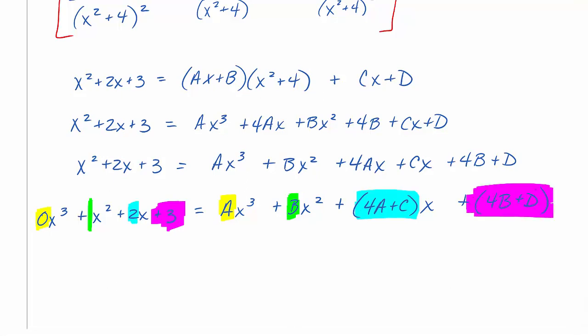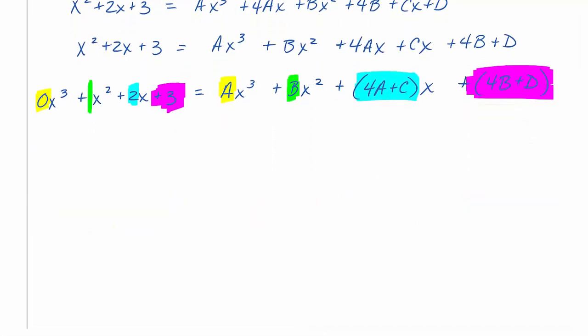All right. So here's our system. a equals 0, b equals 1, 4a plus c equals 2, and 4b plus d equals 3.